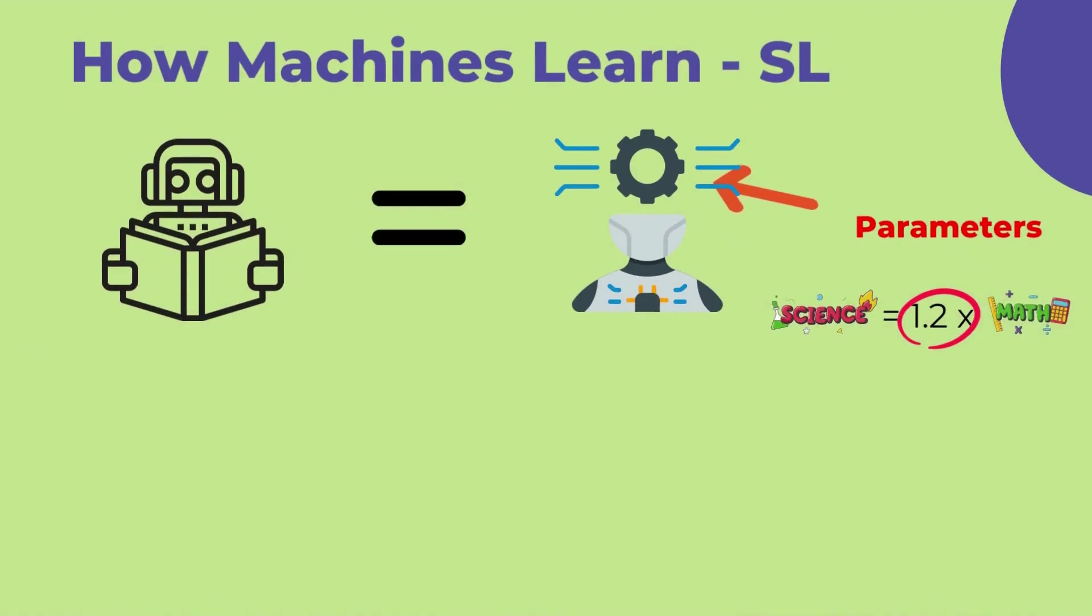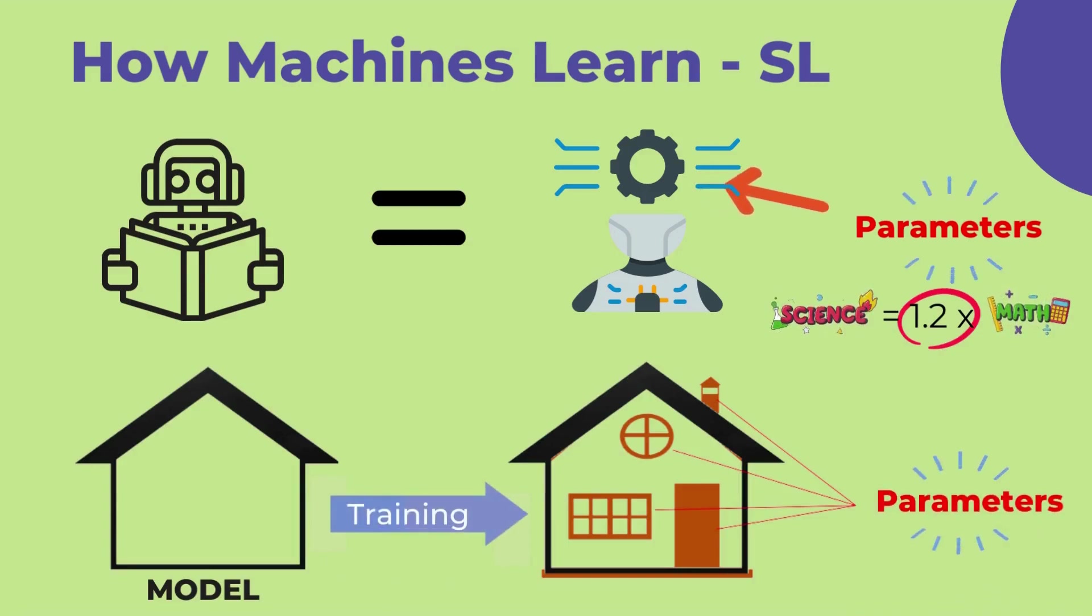In the end, machine learning means finding the parameters, or weights, within the model. Parameters here refer to the coefficients of the function. So, when a model learns, it is essentially the process of finding coefficients. The initial model is like an empty house, with parameters not yet determined. Through learning, the appropriate parameter values are updated, similar to filling in details like windows, doors, and chimneys for a house.